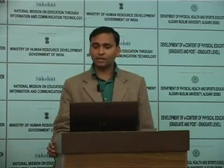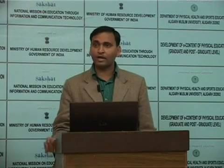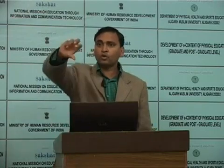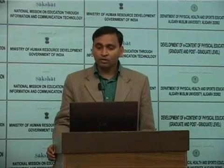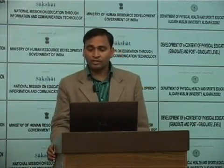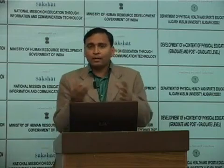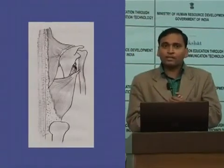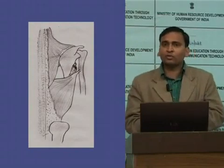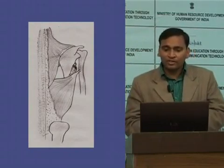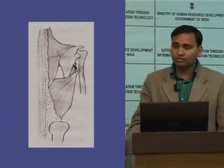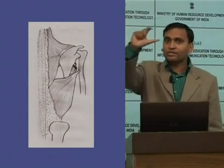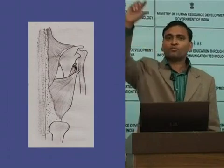The latissimus dorsi muscle arises from an aponeurosis — a group of bundles of muscle — originating from the thoracolumbar fascia. The thorax and lumbar muscles are covered in the thoracolumbar fascia. It originates from the spinous processes of the lower six thoracic vertebrae — that is T7 to T12 — as well as from some fibers from the intermediate sacral crest of the sacrum.